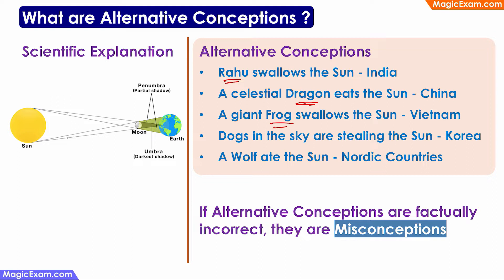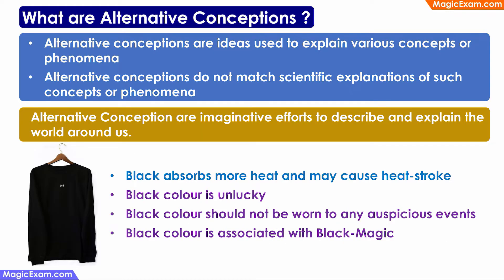In Korea, they say there are some dogs in the sky stealing the sun and causing the solar eclipse, whereas in the Nordic countries, they say a wolf ate the sun. So there is a scientific explanation for this phenomenon and there are several alternative conceptions for the same phenomenon. If these alternative conceptions are factually incorrect, then they are called misconceptions. The definition of alternative conceptions is that they are ideas used to explain various concepts and phenomena that do not match the scientific explanation.